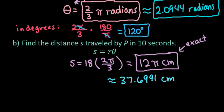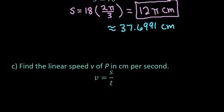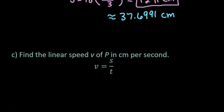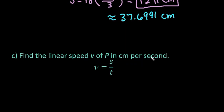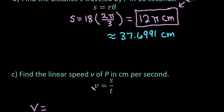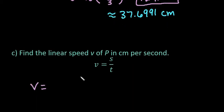We have one more thing that we are going to find with this, and the last thing that we are going to do is we're going to find the linear speed, V, of P in centimeters per second. So we're going to take the information that we've been working with, and our S is going to be the value that we found in the last one. So that's going to be our 12 pi centimeters, and our time is 10.